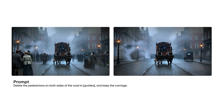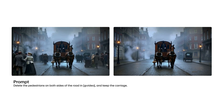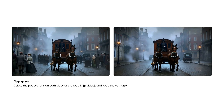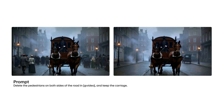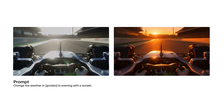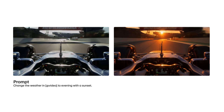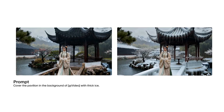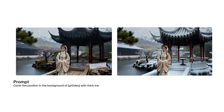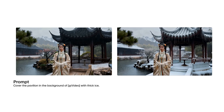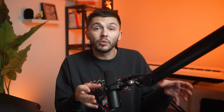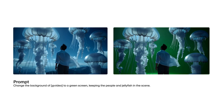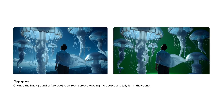Thanks to the model's deep semantic understanding, it understands everything — meaning you can input images, videos, and text, and simply type out prompts like 'remove people' or 'change the time or weather,' and the model handles the pixel-level reconstruction automatically. You can even turn videos into green-screen versions.